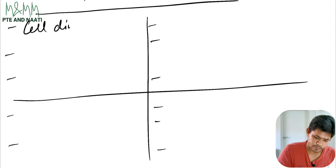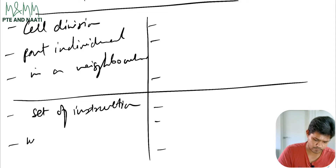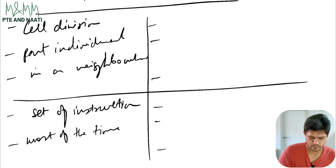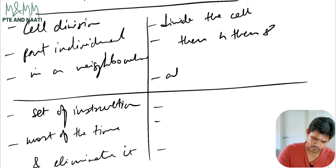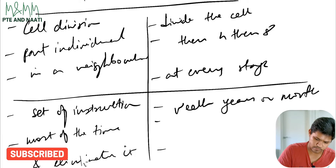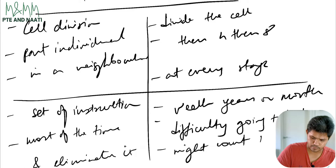Cell division is an intricate chemical dance that's part individual, part community driven, and in a neighborhood of a hundred trillion cells, sometimes things go wrong. Maybe an individual cell's set of instructions — or DNA — gets a typo, what we call a mutation. Most of the time the cell senses mistakes and shuts itself down, or the system detects a troublemaker and eliminates it. But enough mutations can bypass these fail-safes, driving the cell to divide recklessly. That one rogue cell becomes two, then four, then eight — at every stage the incorrect instructions are passed along. Weeks, months, or years later you might see your doctor about a lump, difficulty going to the bathroom, or a blood test might count too many white cells. Your doctor delivers the bad news: it's cancer.